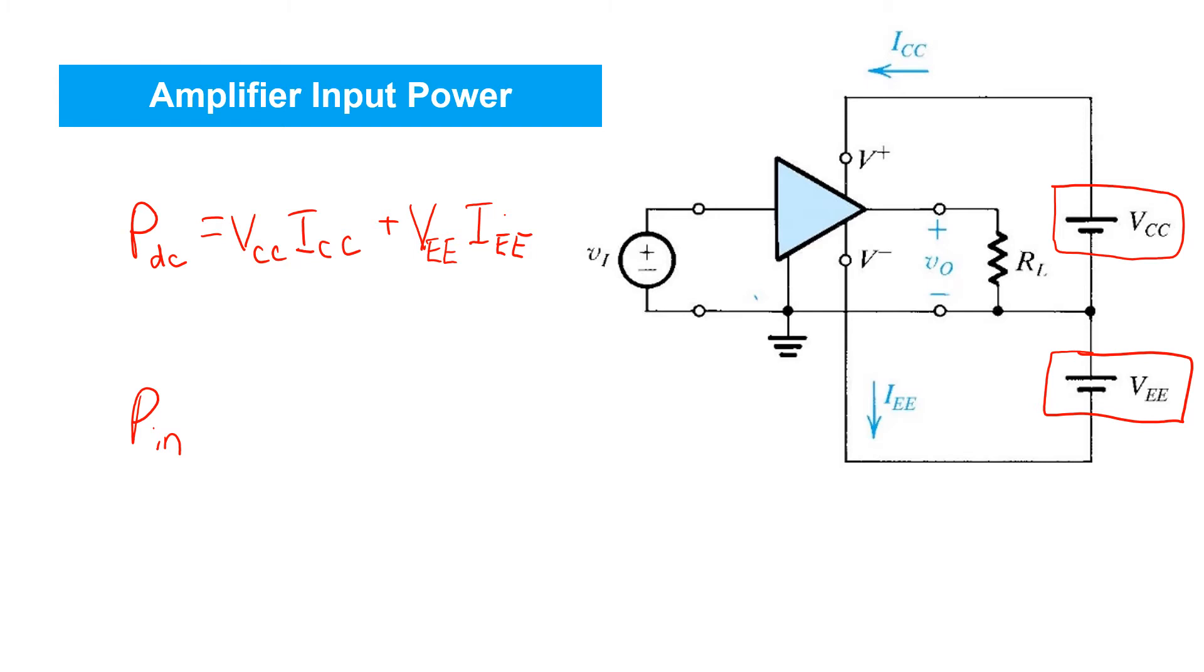The input power from the source VI is simply the product of VI and the input current II.